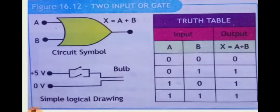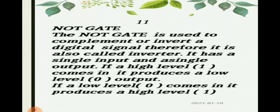So this is the OR gate. The next one is the NOT gate. The NOT gate is used to complement or invert a digital signal, therefore it is also called an inverter.